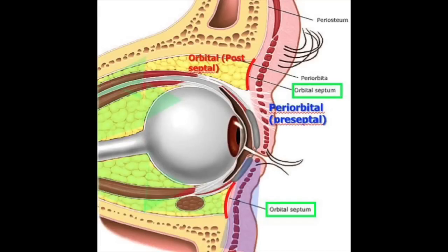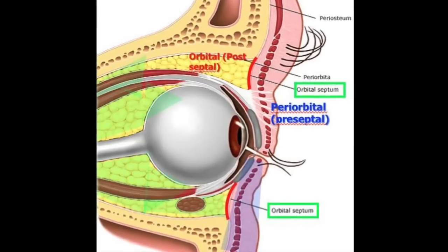Looking at this picture, we can see in the rectangles the orbital septum. This is the anatomical point that defines either a periorbital cellulitis or preseptal cellulitis and an orbital cellulitis. When the inflammation is in front of the eye or before the septum, we call it periorbital or preseptal cellulitis. When the infection has spread beyond the septum and into the orbit, we call it orbital cellulitis.